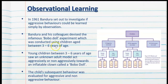Let's go back to the Bobo Doll experiment conducted by Albert Bandura and his colleagues. In 1961, Bandura set out to investigate if aggressive behaviours could be learnt simply by observing them. The experiment was conducted using children aged between three to six years. These children saw an unknown adult model act aggressively or non-aggressively towards an inflatable clown called a Bobo Doll depending on what group they were allocated to, and their subsequent behaviour was evaluated for aggressive and non-aggressive behaviour.